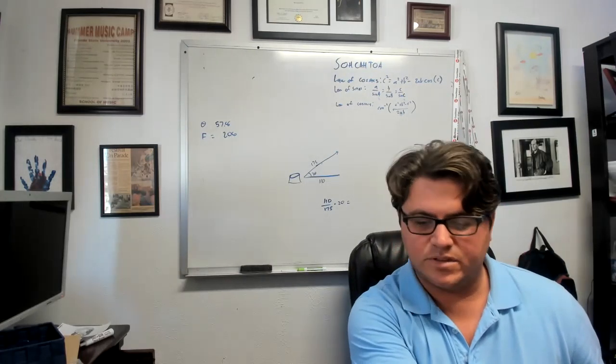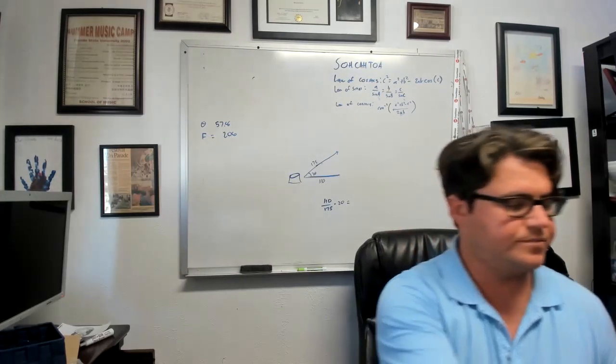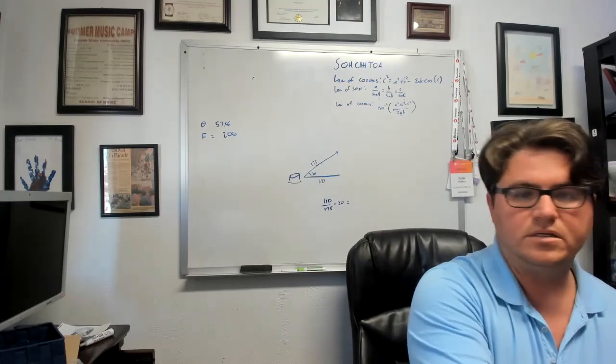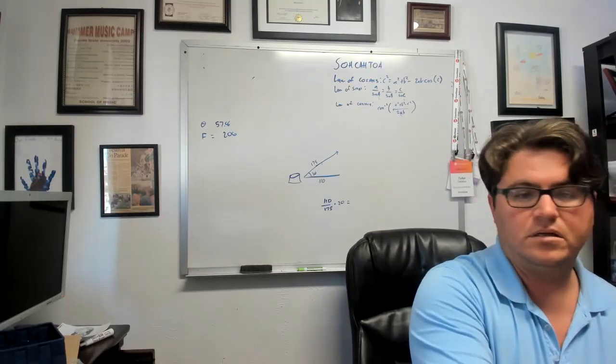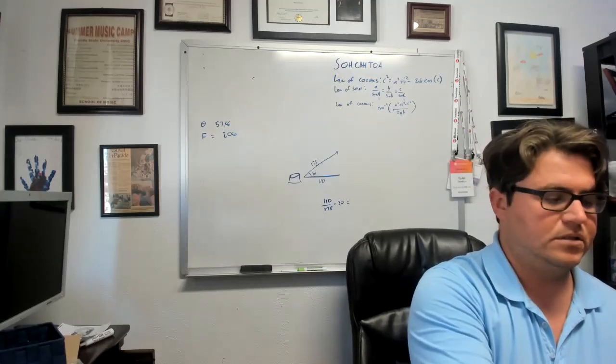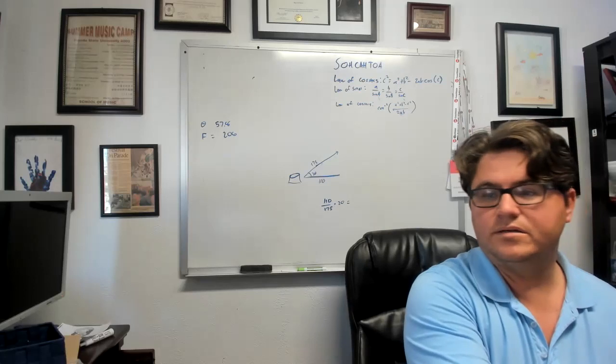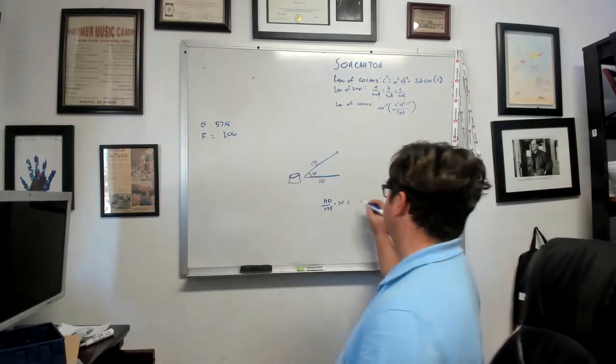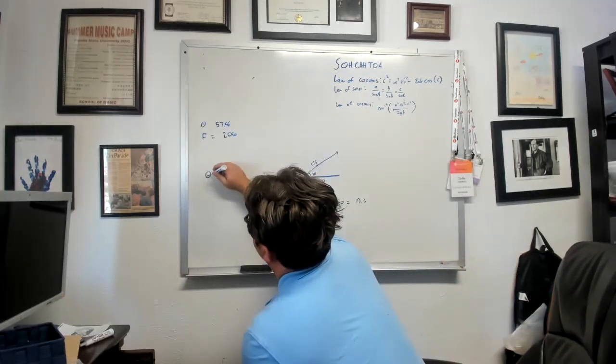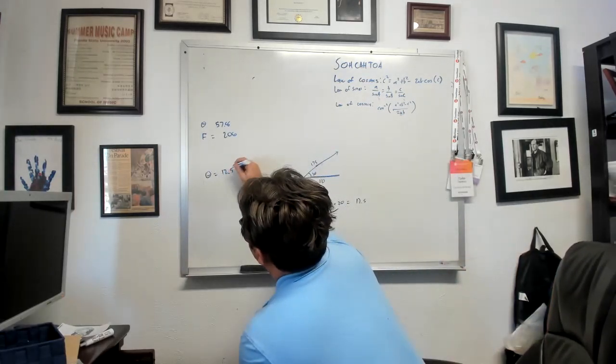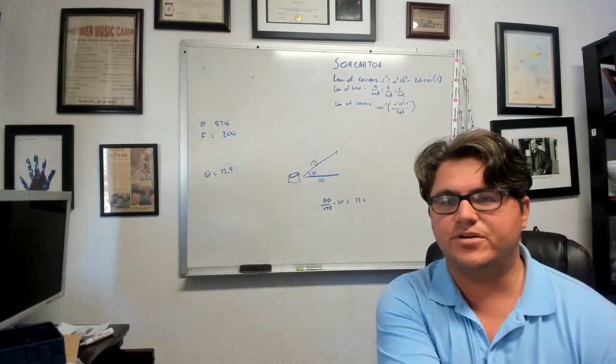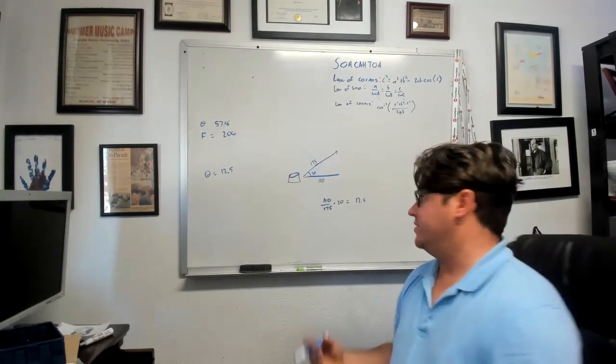Let's see. I don't have this one stored nicely. So 110 over 175 times 20. So this will give us about 12.5. So here we've got our theta equals 12.5. And you can do this significantly more complex using trigonometry, but for the most part you don't need to.